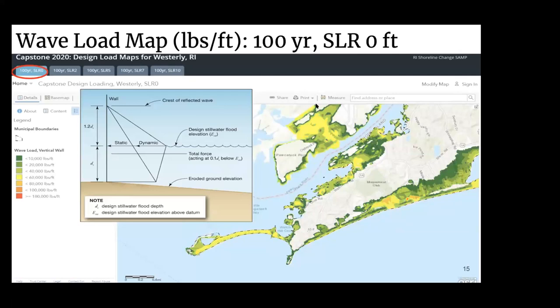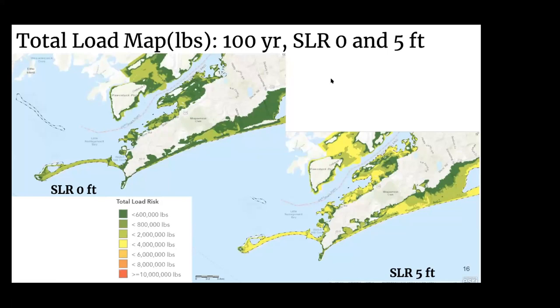This is our wave load map. You can see that the wave load impacts this area the most and has the highest magnitude. The cartoon shows an example of how a wave load is applied to a vertical wall. You can see there are really high wave loads around Napatree Point as well. This is our total load map — we added the different loads together to calculate the total load on the structures. You can see that as sea level rise increases, there's more area affected by higher loads.